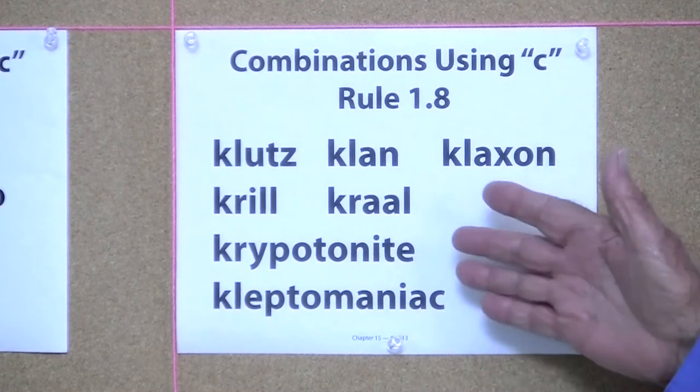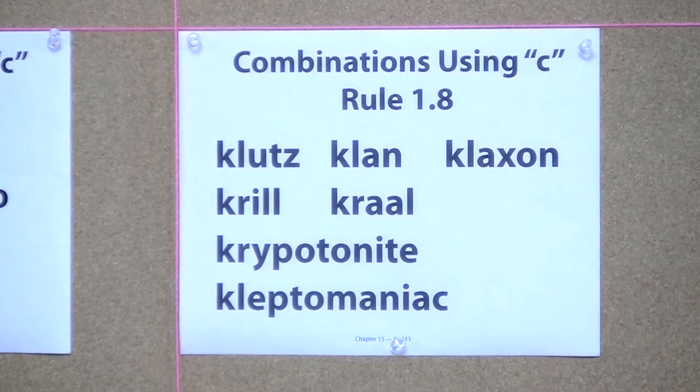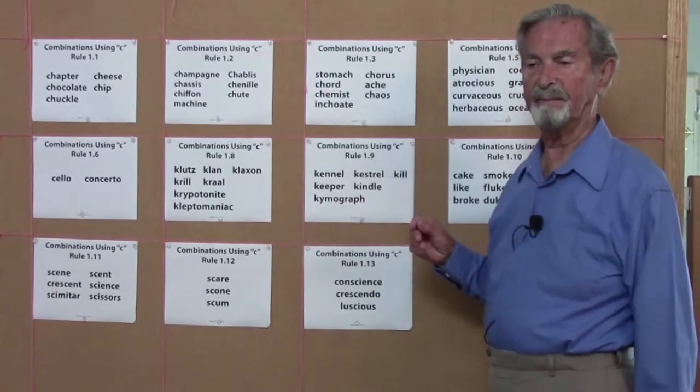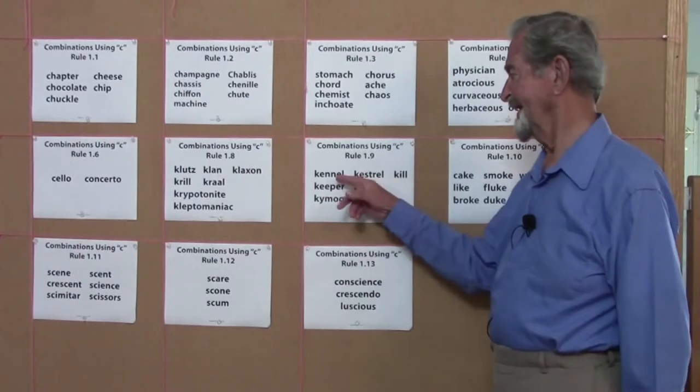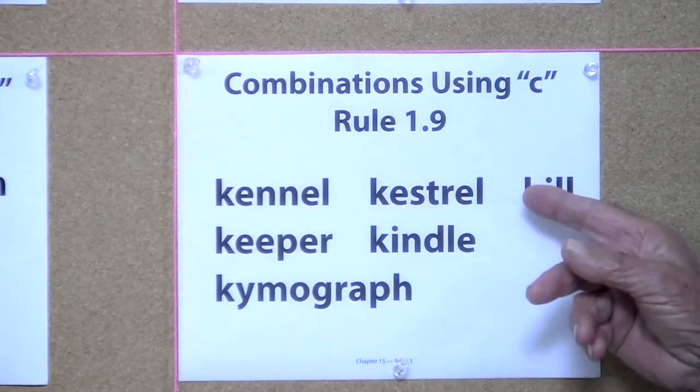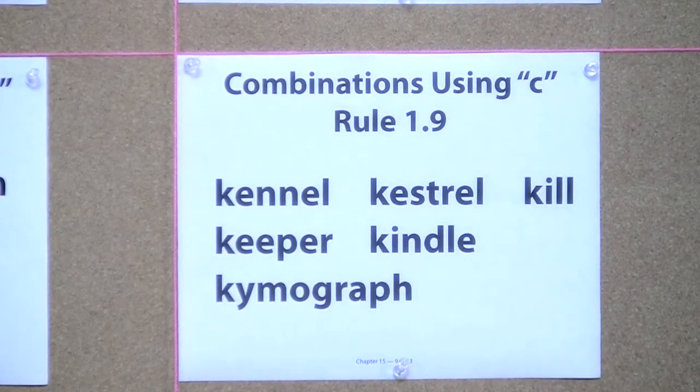Which would, if they were English words, be spelled with a C. These words are spelled with a K because if they were spelled with a C, C coming before E and I and Y would change the sound of the C.